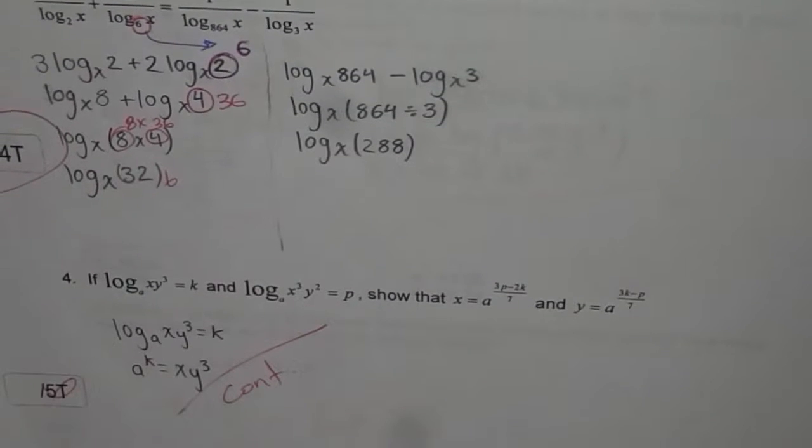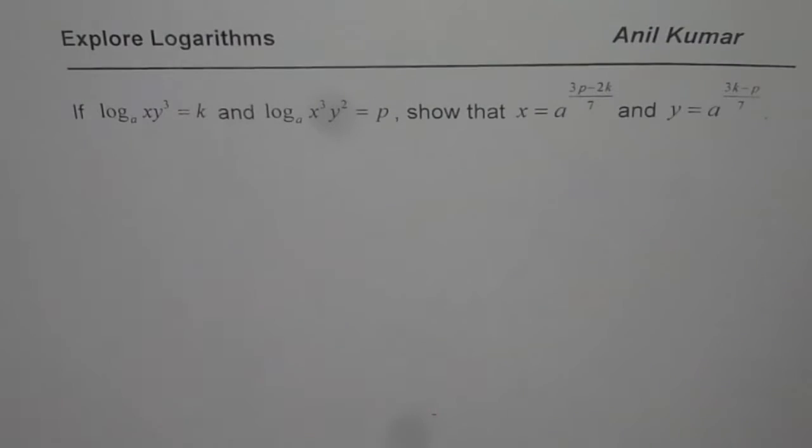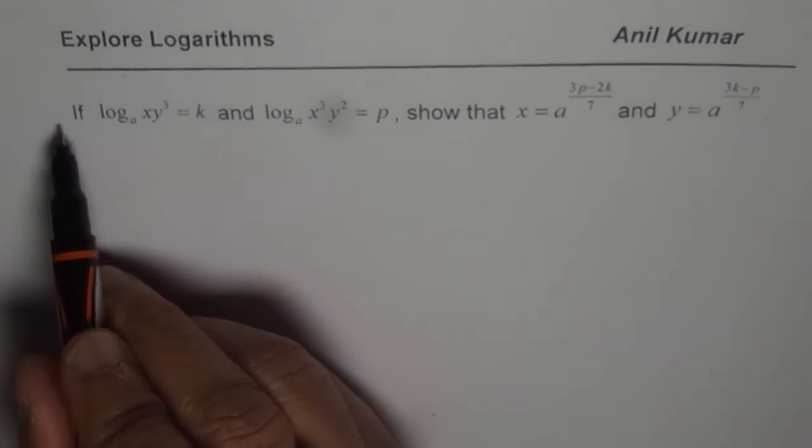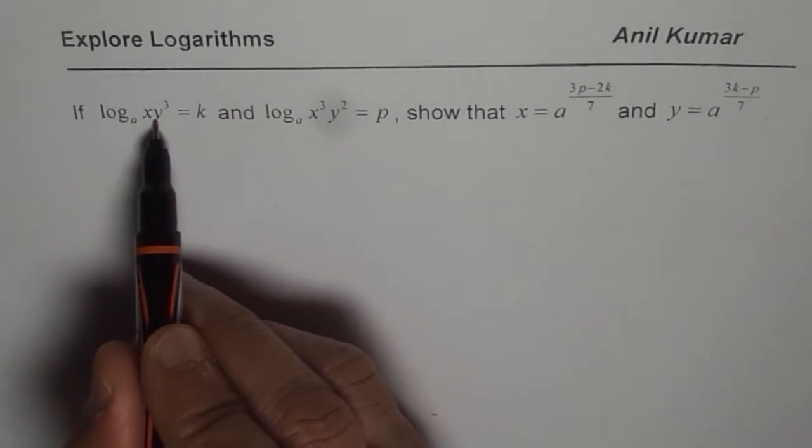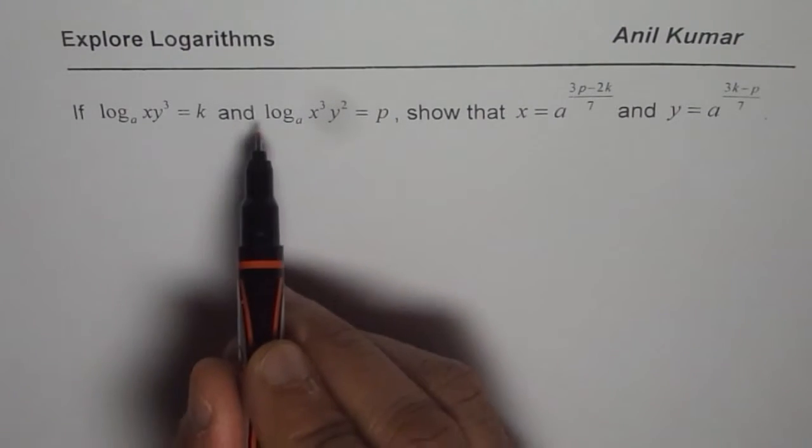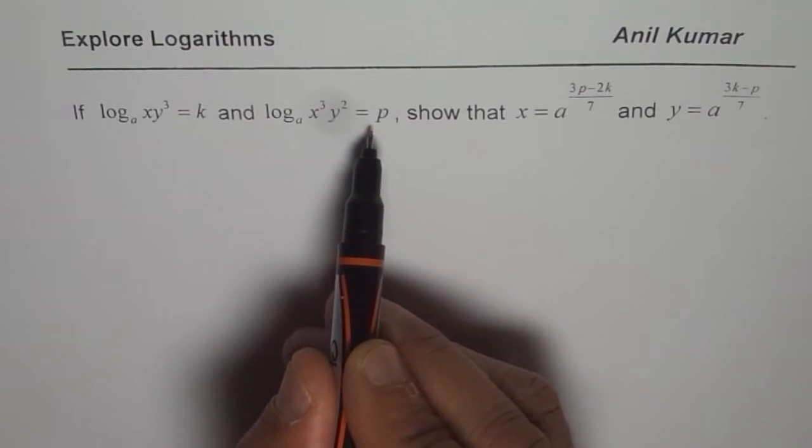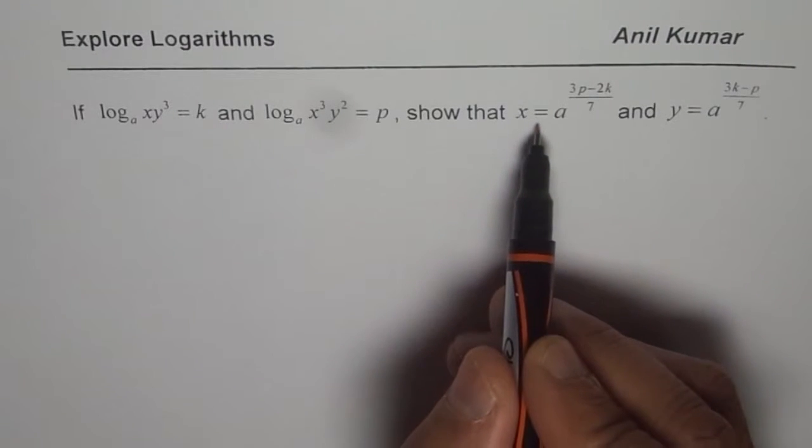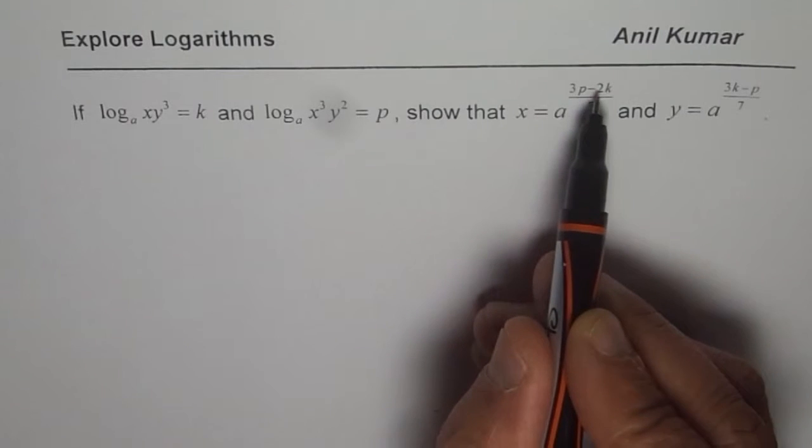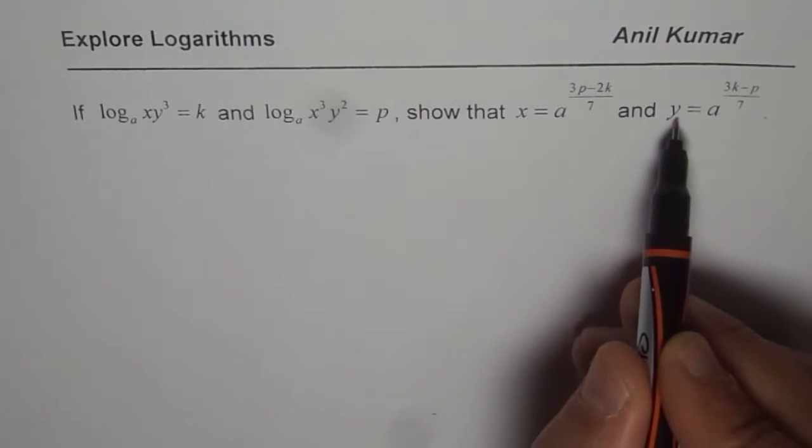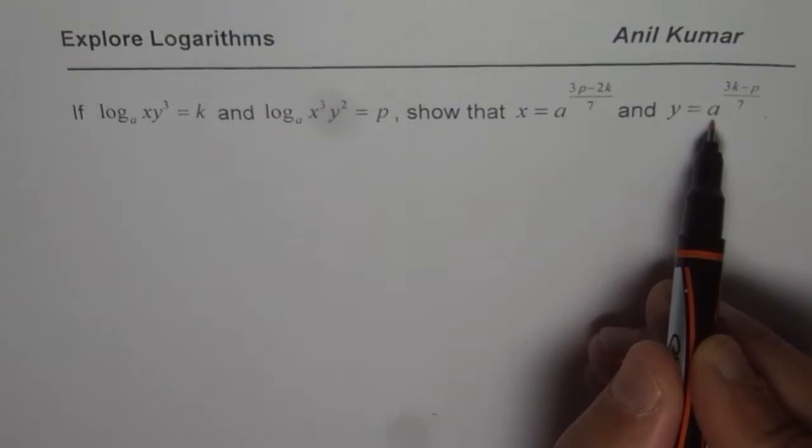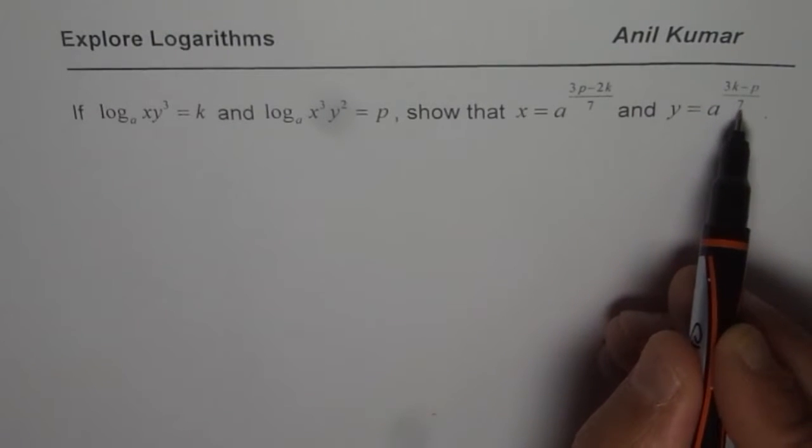Let us find the easiest way of solving it. The question which I am going to discuss with you now is: if log to the base A of xy³ equals k and log to the base A of x³y² equals p, show that x equals a to the power of (3p - 2k)/7 and y equals a to the power of (3k - p)/7.